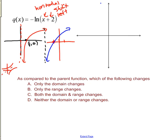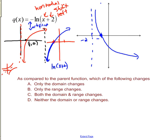So that's ln of the quantity x plus two. Then the negative outside the ln is a vertical flip — up and down. The part that was going down is now going up, and the part that was going up is now going down. The asymptote stays at x equals negative two. What changed? The original domain was above zero; the new domain is above negative two — that has changed. The range was negative infinity to infinity, and it is still negative infinity to infinity. So only the domain changed.